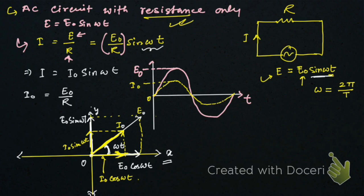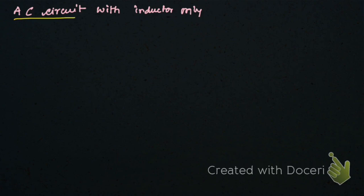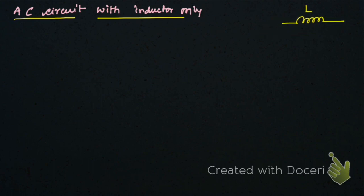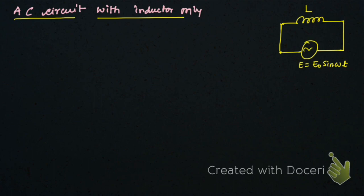Now let us discuss AC circuit with inductor only. Suppose we have a circuit with an inductor of self-inductance L connected to an AC voltage source e = e₀ sin(ωt). Due to this source, a current i flows through the circuit and the inductor produces an EMF to oppose the change in current.